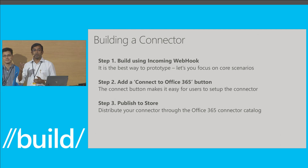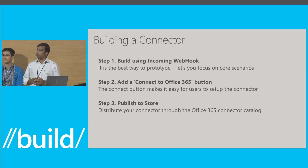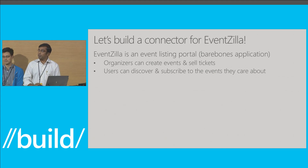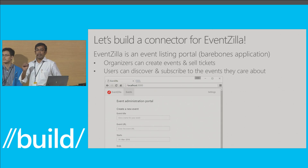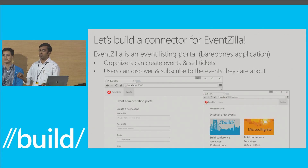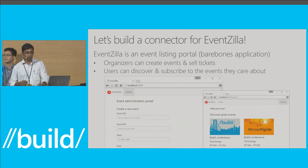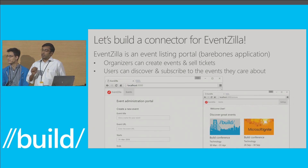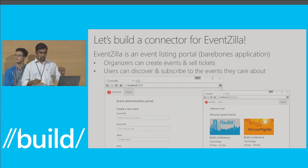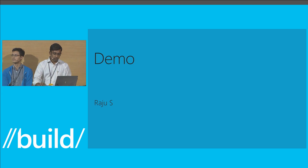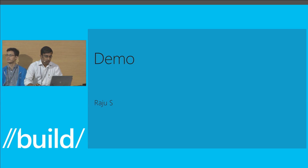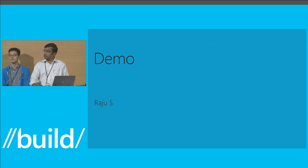Once you're done with that, you go ahead and add a Connect to Office 365 button. A connect button makes it extremely easy for your users to set up your connector. Once done, you distribute your connector by publishing it in the connector store. For this demo, I have built a bare-bones application called Eventzilla — an event listing portal where organizers can create events and sell tickets, and users can discover and subscribe to events they care about. Office 365 has over 60 million enterprise monthly active users, and as a developer, building a connector allows you to tap into this vast user base.